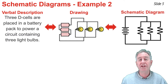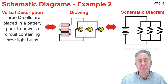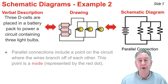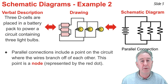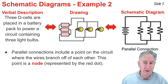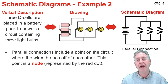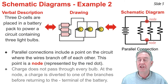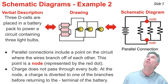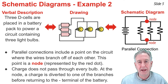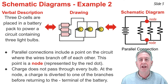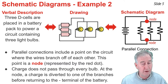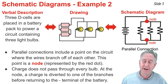We refer to this means of connecting light bulbs as a parallel connection. In a parallel connection, there is a point on the circuit known as a node where the wires branch off from one another — represented by a red dot on the schematic diagram. There is also a second node where the wires come back together.